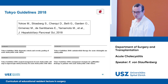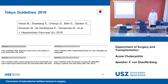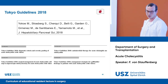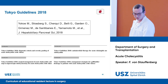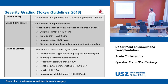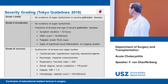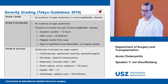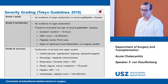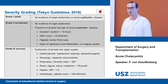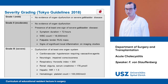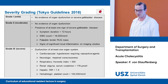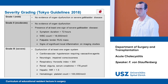In 2018, an international group published the Tokyo Guidelines on management of acute cholecystitis, establishing severity grading. Grade 1 is mild cholecystitis with no evidence of systemic organ dysfunction or severe gallbladder disease. Grade 2 is moderate cholecystitis with no systemic organ dysfunction but at least one sign of severe gallbladder disease: symptom duration over 72 hours, white blood cell count over 18,000, palpable tender right upper quadrant mass, or significant local inflammation on imaging. Grade 3 is severe cholecystitis with dysfunction of at least one organ system: cardiovascular, neurologic, respiratory, renal, hepatic, or hematologic.